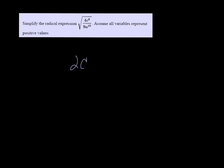We're going to simplify this expression. Assume all variables are positive. So in the numerator, I can take the square root of that and get 2c cubed. And in the denominator, I would get 3a to the fifth power.